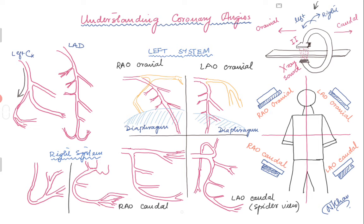We're going to start from the top right corner. We have to know how the image intensifier, the X-ray source, and the C-arm work. The X-ray source is below the table, and the image intensifier (II) is the one that accepts or absorbs the radiation coming from the X-ray beam. So if the II is anterior, the X-ray source is below or posteriorly. If the II goes to the right side, the X-ray source will be on the left side.